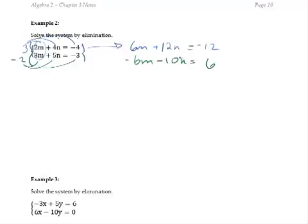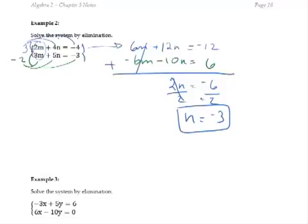Once it's set up, this looks like our first example. We can line these up and we can say, okay, add. 6m minus 6m cancels. 12n minus 10n is 2n. And then we get a negative 6. Divide by 2. We get n equals negative 3. Okay, that's part of our solution.